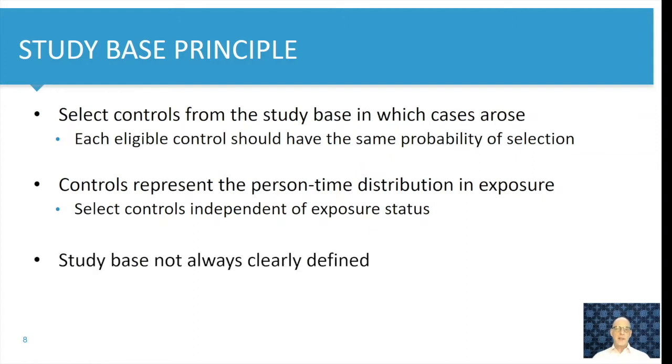The problem is a little bit that the study base is not always clearly defined. You might be lucky that the cohort study that you envision where your case control study is coming from is actually being performed. We will come to that later. But very often cases are selected from some kind of health register or hospital register. And it is not very clear from where these cases exactly arose. And if we don't know that, it is also very difficult to find controls that satisfy the study base principle.